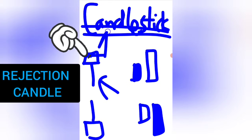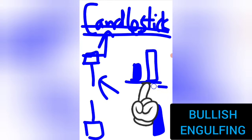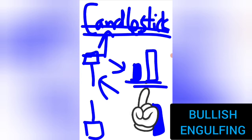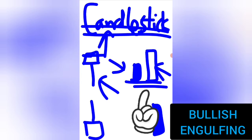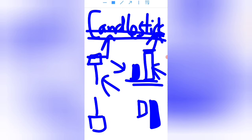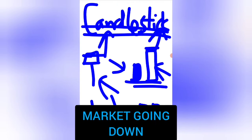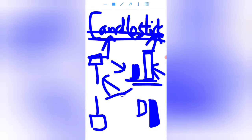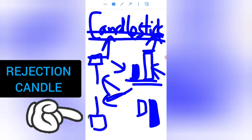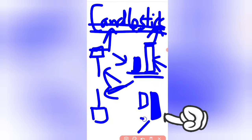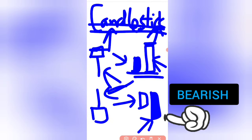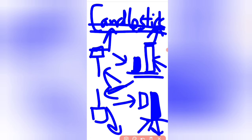When you get to your entry point and you have a rejection candle — also known as a pin bar — for a buy trade, that is a confirmation. You can also look for a bullish engulfing pattern: a small candle on the left followed by a big bullish candle on the right confirms the market wants to go up. When the market is going down, you use opposite confirmations: rejections at the top and big bearish candles next to a small bullish candle tell you the market wants to go down.